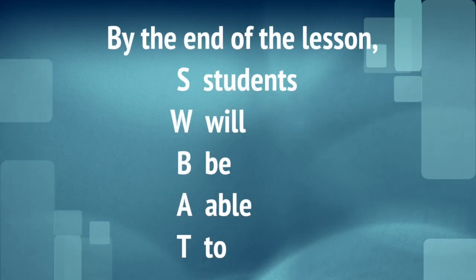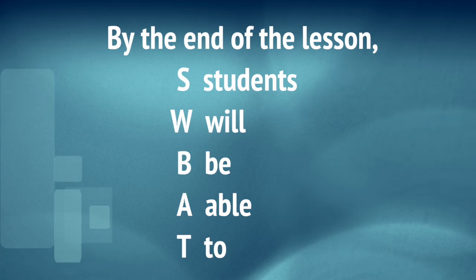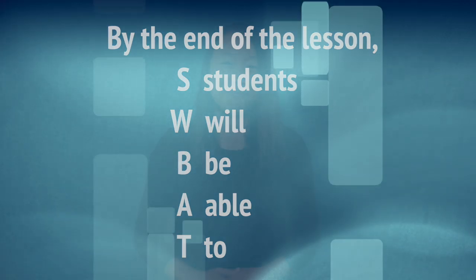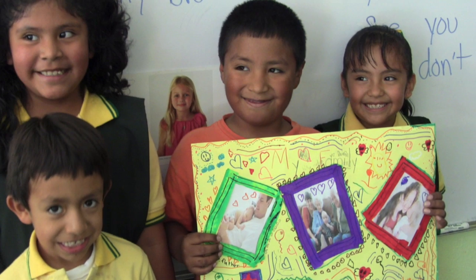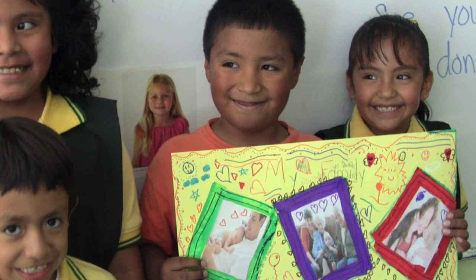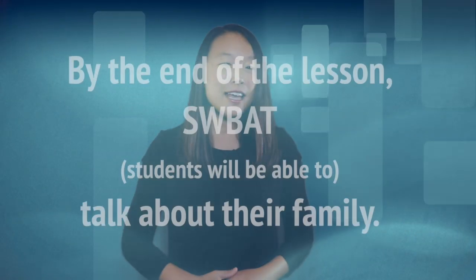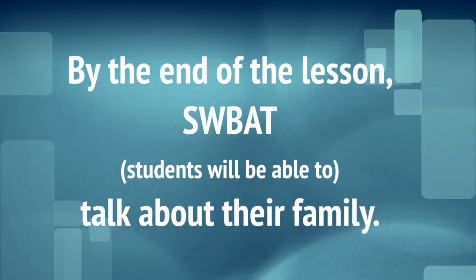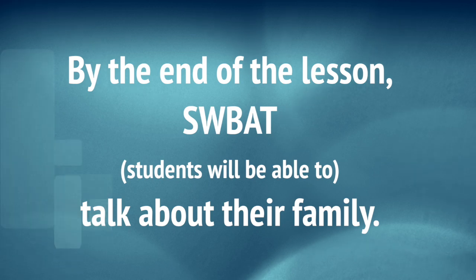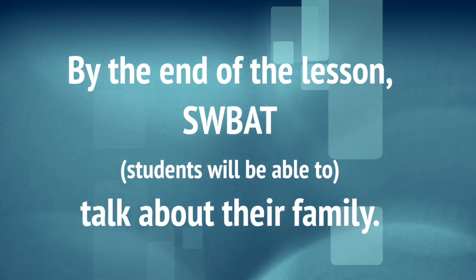This is why you should always write your objectives by starting with: 'By the end of the lesson, students will be able to...' or SWABAT. For example, you are teaching students to talk about their family. Your objective would be: 'By the end of the lesson, SWABAT — students will be able to — talk about their family.'